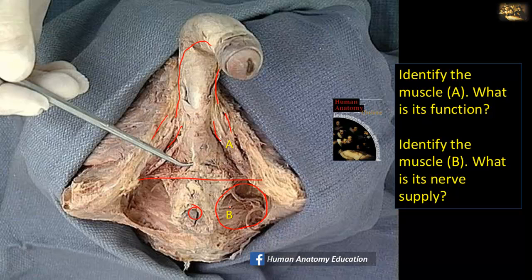Medially, the ischioanal fossa is bounded by muscle fibers that come from above and are directed medially — this is the levator ani muscle. What is its nerve supply? The levator ani is supplied by the pudendal nerve and its inferior rectal branch.